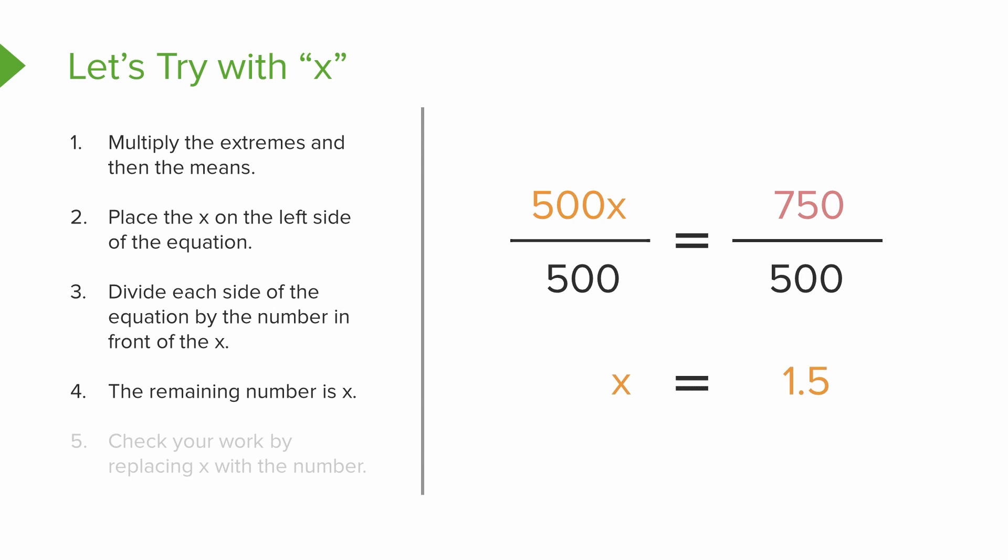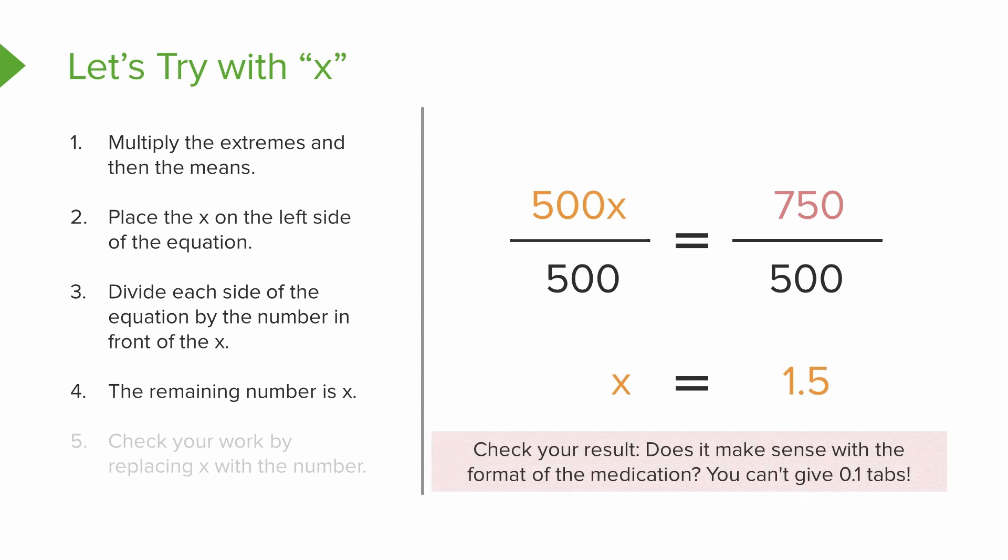Now 500x divided by 500 is 1x, but you can always just write x. You don't have to put the one in front of it. Now we've got 500 into 750 and we've got one and a half times. So x equals one and a half. Now stop and think for just a minute. First of all, before we check our work, does that make sense? With a tablet, could I come up with one and a half tablets? Yes, that's reasonable. Could I come up with 1.134567 tablets? No, I can't break a tablet down to those small amounts. I can do a half a tablet, but I can't do tiny hundreds of a decimal place of a tablet.